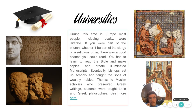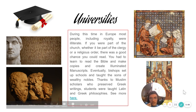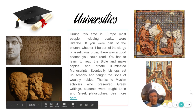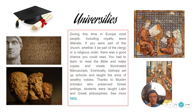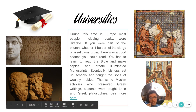Universities: during this time in Europe, most people — including royalty — were illiterate. If you were part of the church, whether part of the clergy or a religious order, there was a good chance you could read. You had to learn to read the Bible, make copies, and create illuminated manuscripts. Eventually, bishops set up schools and taught the sons of wealthy nobles. Thanks to Muslim scholars who preserved Greek writings, students were taught Latin and Greek philosophies.